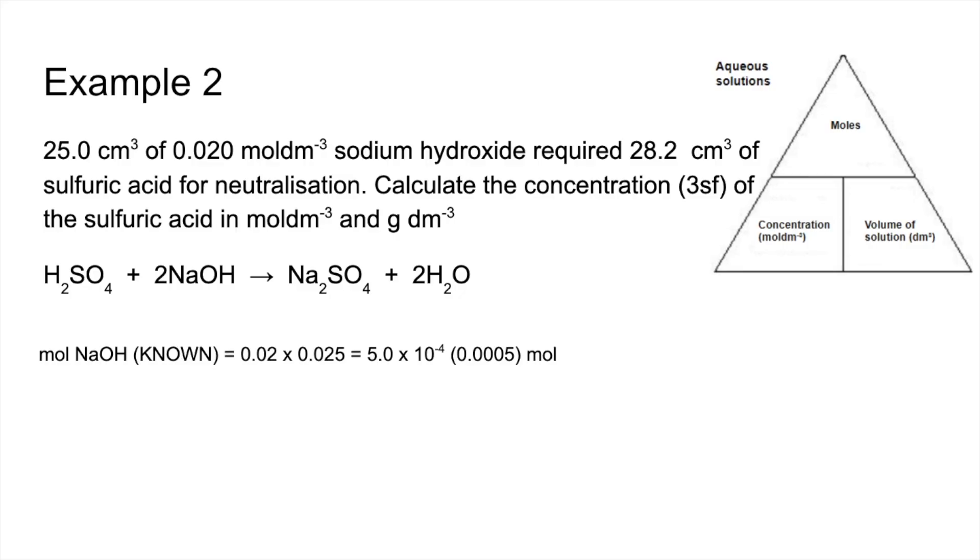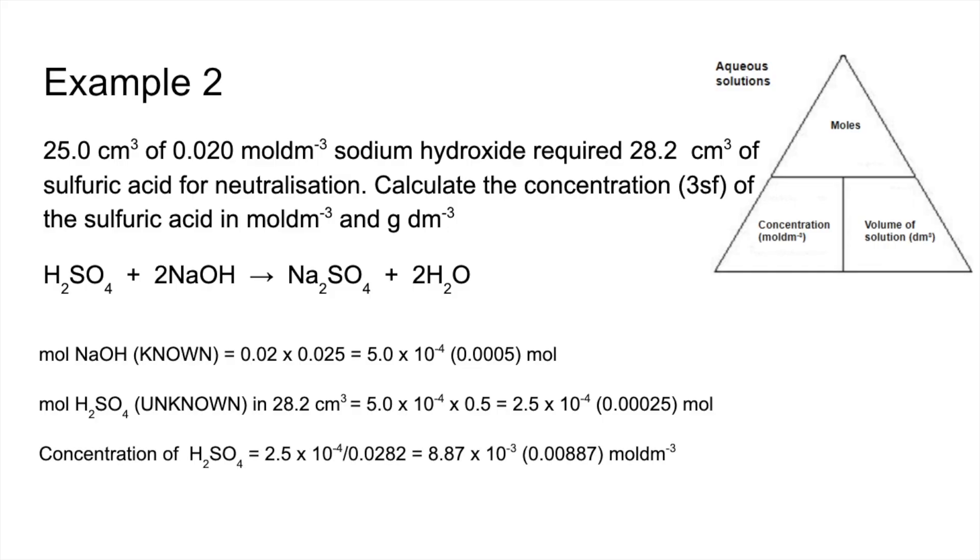The moles of the sulphuric acid will be half of that because of the mole ratio. So that's 2.5 times 10 to the minus 4. And those moles are in that 28.2 cm cubed of sulphuric acid. So the concentration, therefore, is those moles divided by the volume that they're in.